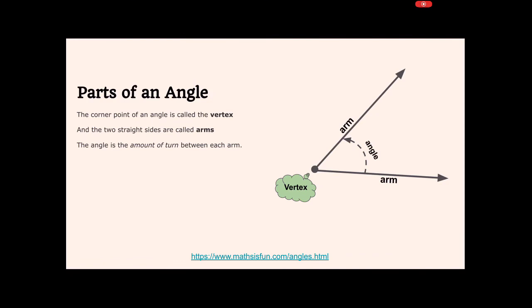And then notice, where's the actual angle itself? What is the thing we're actually measuring? And you'll notice it's that curved space between those two arms. That's what we're measuring here. So the angle's the amount of turn between each arm. So you can imagine these, as they get closer, the angle gets smaller. As they get further apart, the angle gets bigger. I got that link on the bottom there that you can play around with, too.